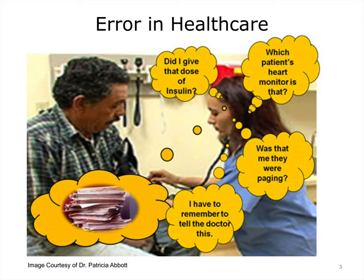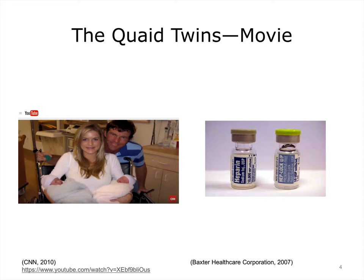The next slide contains a link to a video that's a good idea for you to watch. It does require an internet connection. It's an elective video, so if you do not have an internet connection, do not worry. If you do, copy the URL and watch it when you have a moment. This video from YouTube illustrates an avoidable medical error involving actor Dennis Quaid's newborn twins. This link was accurate as of February 2016. If unavailable, you can do an internet search on Quaid twins and medication error, and you should be able to easily find this video.